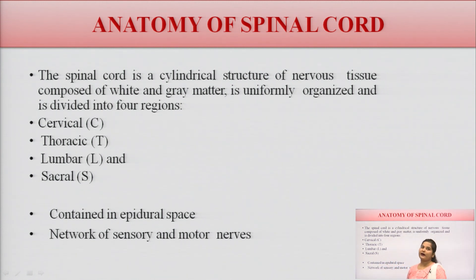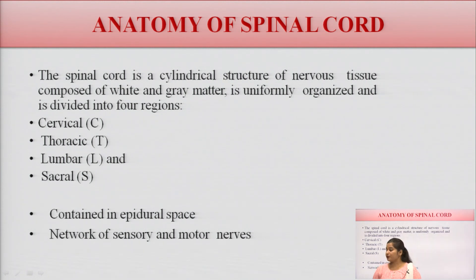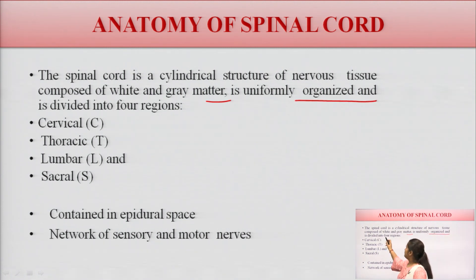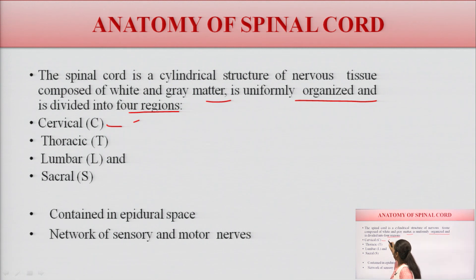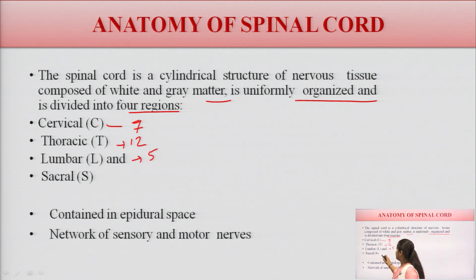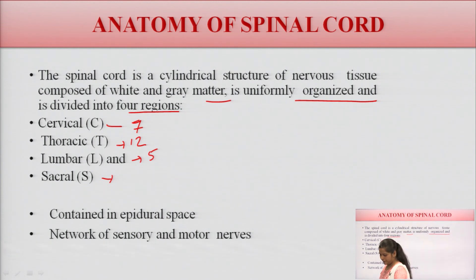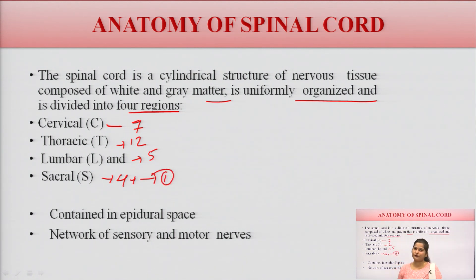The spinal cord is a cylindrical structure of nerve tissue composed of white and grey matter, uniformly organized and divided into four regions. Cervical has 7 segments, thoracic has 12, lumbar has 5, and sacral and coccyx vary in number — sacral is typically 5, and coccyx is 4 or 5 fusing into one.